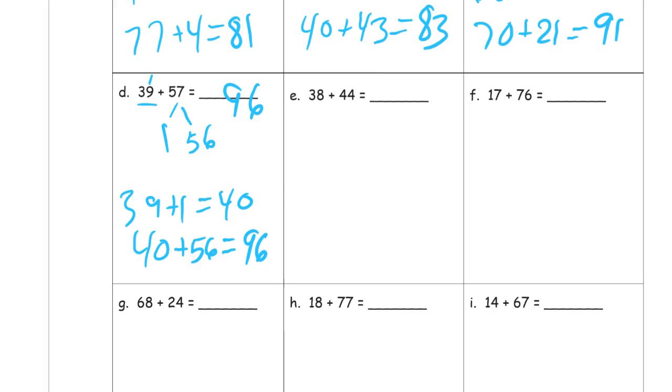38 and 44. Well, there's an 8 right there. So, I need a 2. And this other part will be 42, because it's 2 less than 44. 38 plus 2 equals 40. And 40 plus 42 is 82.